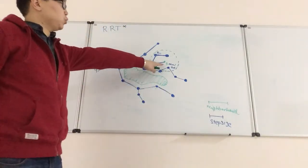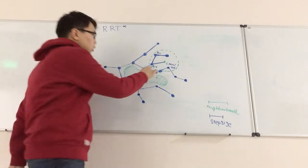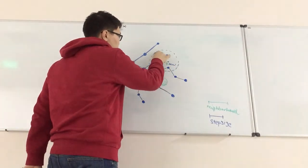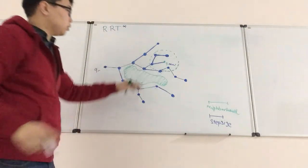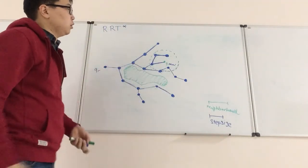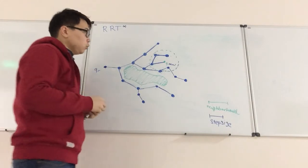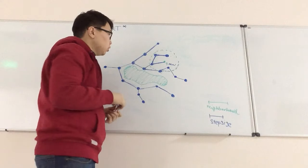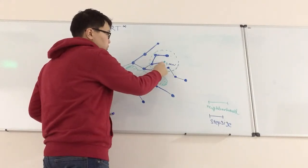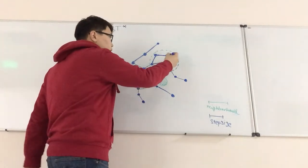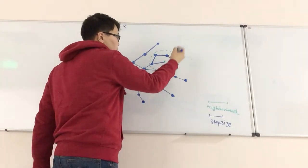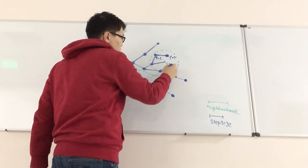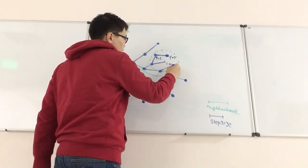Now Q_new is connected to QN2. After that, another step comes into play — it's called Rewire. Here we also look in the vicinity of this node, and now we try to optimize the cost by going through Q_new. Now we have these neighbors: QN0, QN1, QN3.